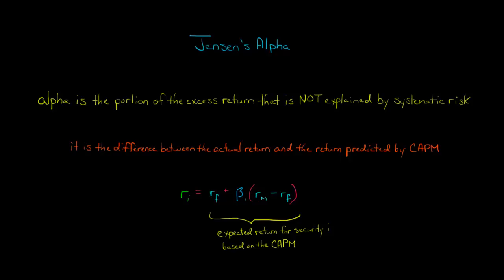In this video, we're going to discuss Jensen's Alpha. Alpha is the portion of the excess return of a security or a portfolio that is not explained by systematic risk.